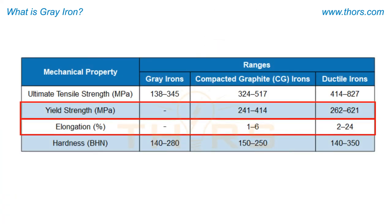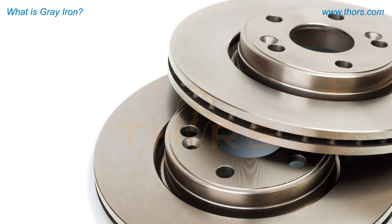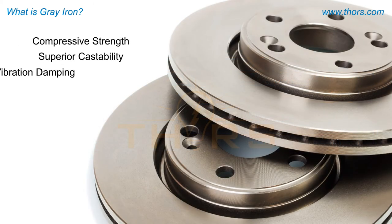Though grey iron has low ductility and tensile strength compared to some other cast irons, its superior compressive strength, castability, and vibration damping characteristics make it a material of choice for a wide range of applications.